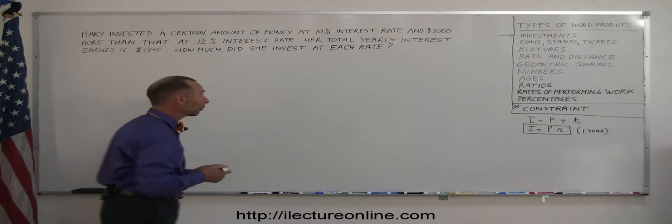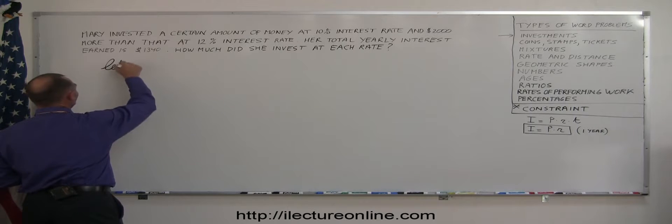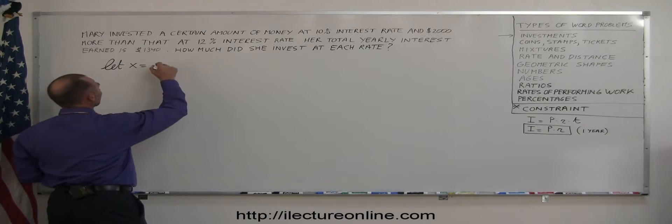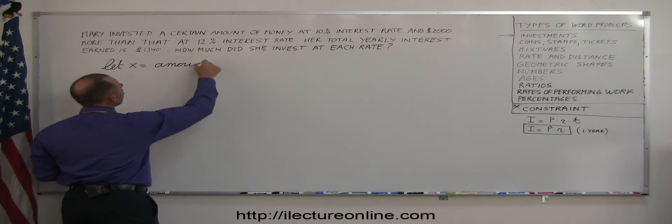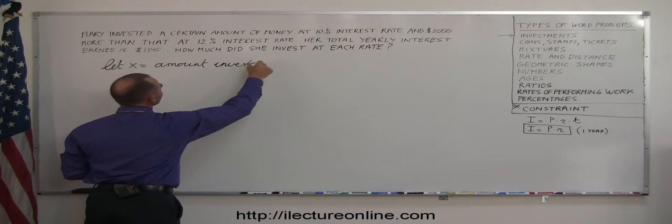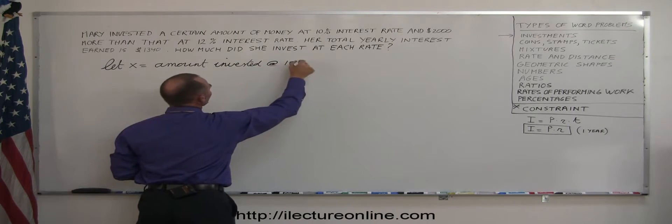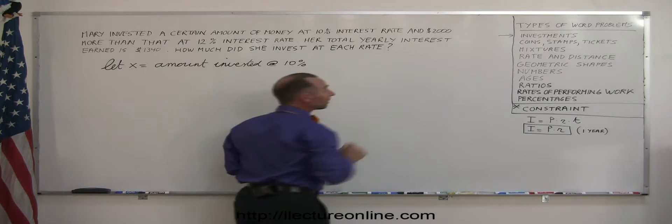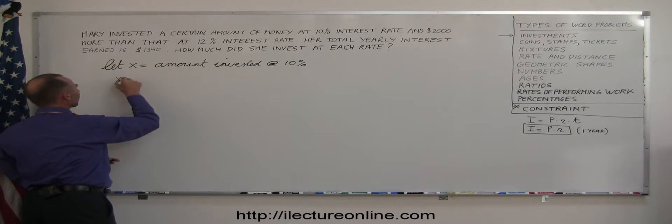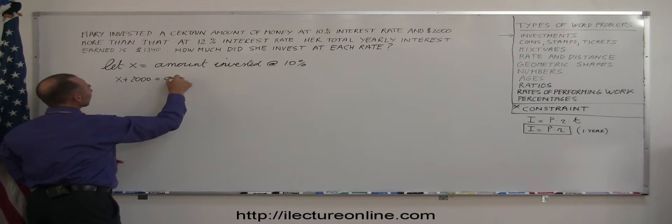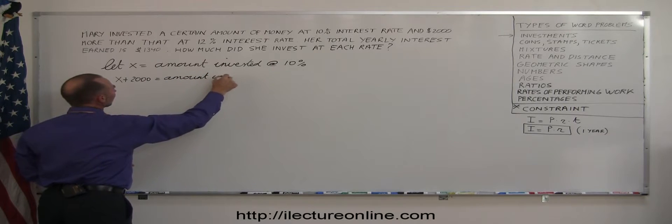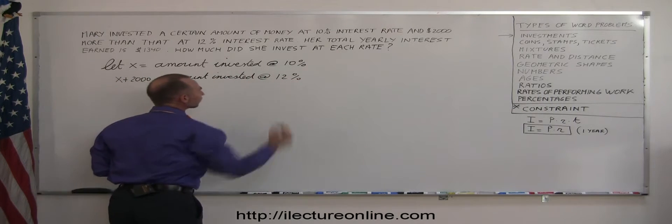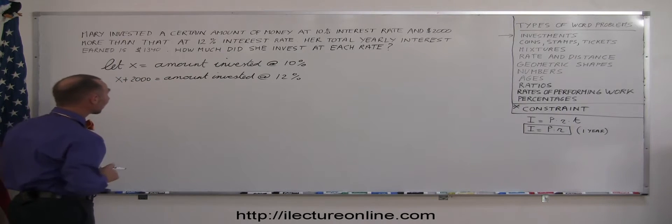Just like all other algebra problems, we're going to use the variable x. Let x equal the amount invested at 10%. Then it says Mary's going to invest $2,000 more than that at 12%, so x plus 2,000 equals the amount invested at 12%. It's very important that you define very carefully what these are.